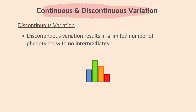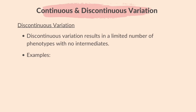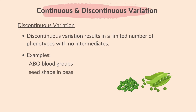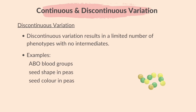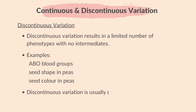Discontinuous variation results in a limited number of phenotypes with no intermediates. Discontinuous variation is usually caused by genes only, unlike continuous variation which is caused by both genes and the environment.